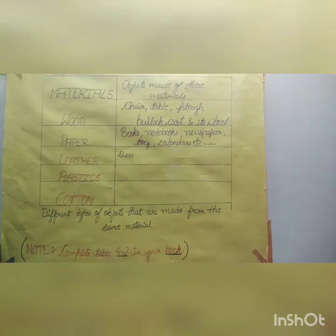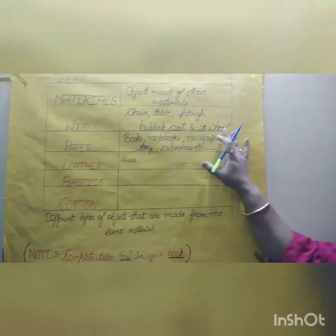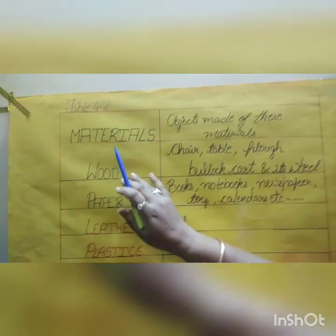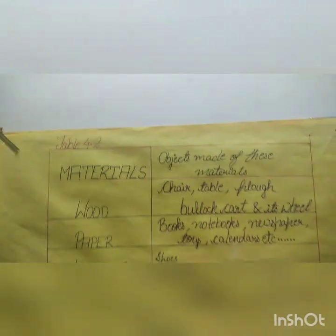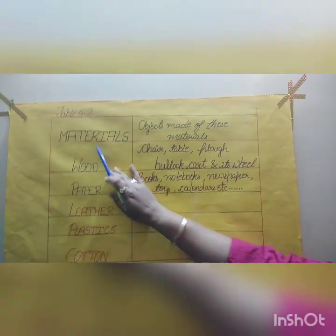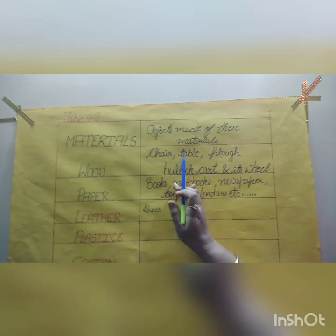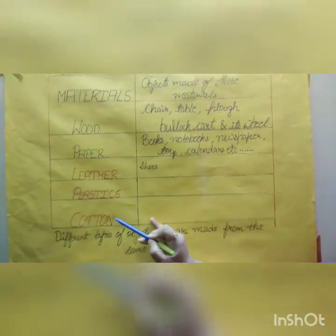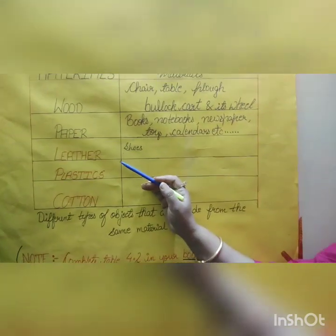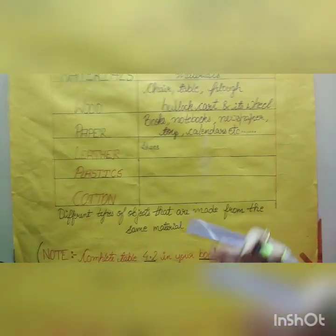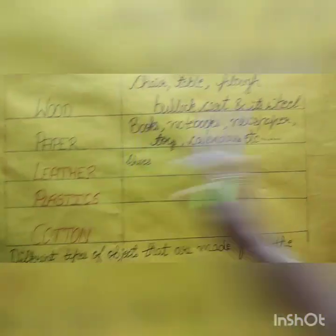Good morning children. Last class we have done Table 4.2. Let me recall what we have done. We took different materials and I asked you that from those different materials, what are the objects which you can make. We did wood, we did paper, and these three I gave you for homework. Let me give answers from my side — if you have written any other answer, it doesn't matter, but it should be made from that material.